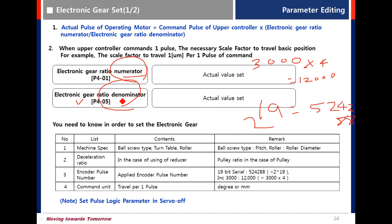In the denominator, set the traveling distance per one pulse of command. For example, when using a 19-bit encoder, set the numerator to 524288 and the denominator to 5000.